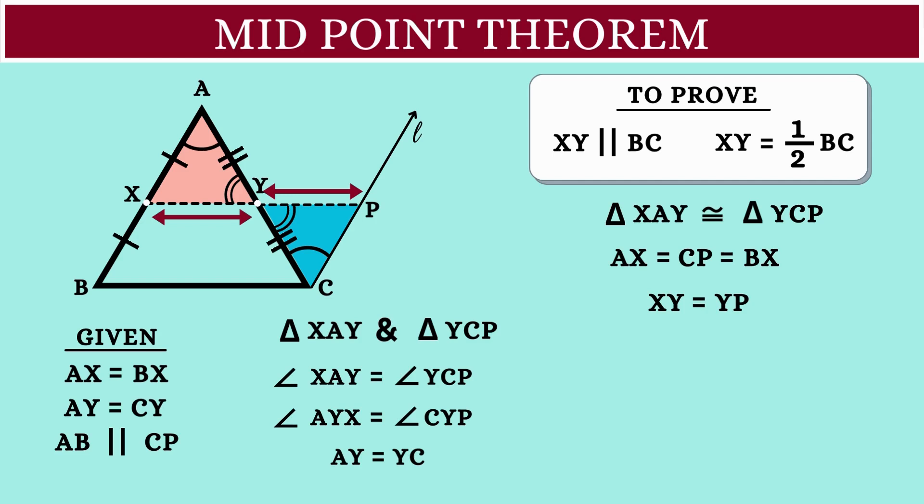Next, let's consider the parallelogram BXPC. The side BC will be equal to the side XP. XP is nothing but XY plus YP.